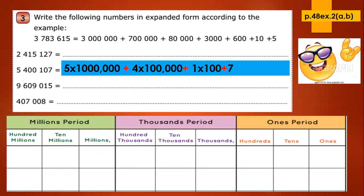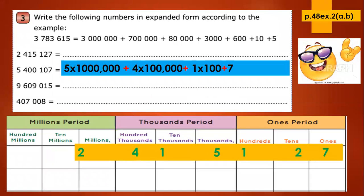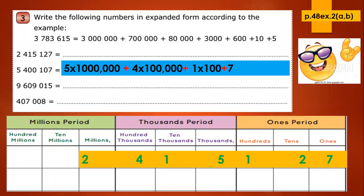Here I have the answers for part B. Now I'm going to explain A. Okay, 2,415,127. I will display this number in the place value chart.